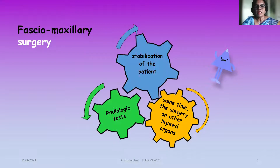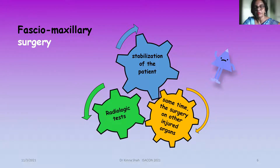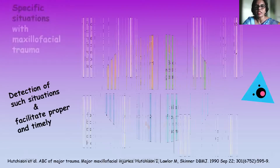Faciomaxillary surgery starts with stabilization of the patient; radiological tests are done at the same time surgery is planned. Other injured organs or injured limbs have to be operated on together with the faciomaxillary part.